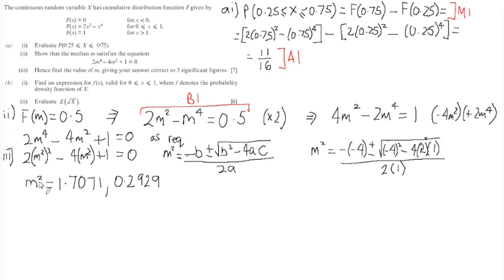Now actually, two things to note here. I don't want M squared, I want M. And second of all, there's two solutions. Which one am I going to use? Well, if you go back to your original question, you'll see that X must lie between 0 and 1. So square root of 1.7 will be larger than 1, so it's not going to be this. So then finally, all I have to do is M will be the square root of 0.2929 as it needs to lie in the range. And when we work through that, we get an answer to three significant figures of 0.541.